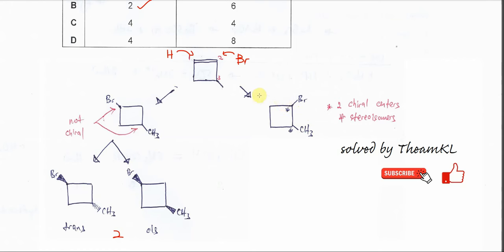So let's make it a bit simple. For this one, we know that after the addition, it will form two chiral carbons. Look carefully. After it's formed this product, this is one chiral carbon and this is another chiral carbon.